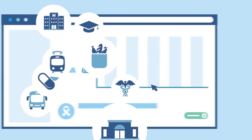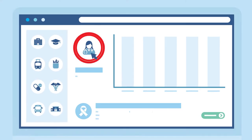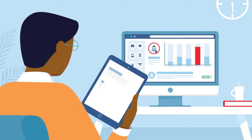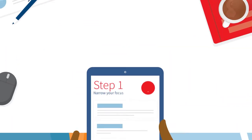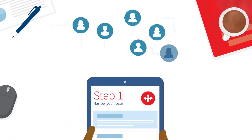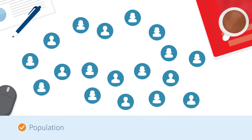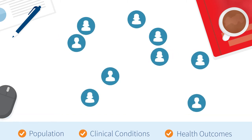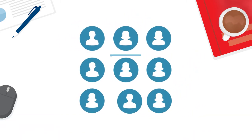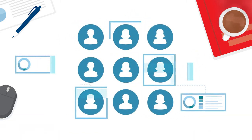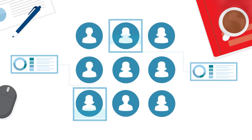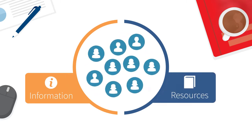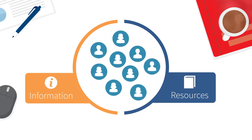To get an effective SDOH initiative off the ground and drive value, we've identified best practices and three key steps to get you started. To begin, narrow the focus of your SDOH program. Identify the population, clinical conditions, and health outcomes that make the most sense for your patient and member populations. Evaluate their needs with clinically validated, high-quality SDOH data to determine if your organization has the information and resources to impact and improve results.